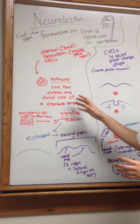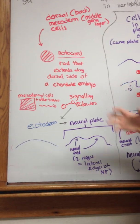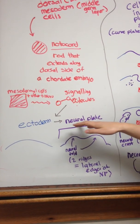After the notochord is formed, we have mesodermal cells and other tissues secreting signaling molecules which tell the ectoderm, the outer layer, to form the neural plate.